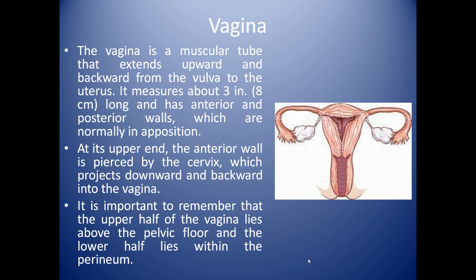Now we will study the vagina and its anatomy. It is a muscular tube that extends upward and backward from the vulva to the uterus, measuring about 8 cm long, with anterior and posterior walls which are normally in opposition. At its upper end, the anterior wall is pierced by the cervix, which projects downward and backward into the vagina. The upper half of the vagina lies above the pelvic floor and the lower half lies within the perineum.